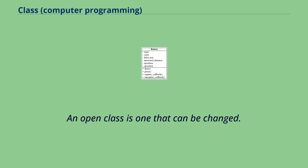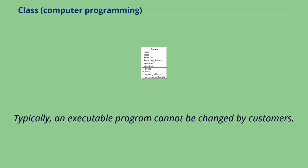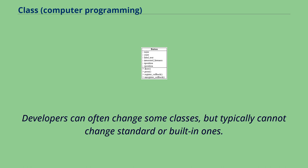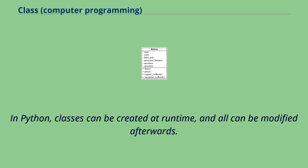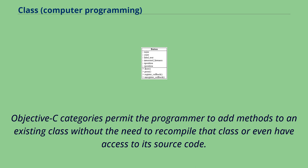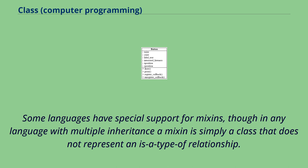An open class is one that can be changed. Typically an executable program cannot be changed by customers. Developers can often change some classes but typically cannot change standard or built-in ones. In Ruby, all classes are open. In Python, classes can be created at runtime, and all can be modified afterwards. Objective-C categories permit the programmer to add methods to an existing class without the need to recompile that class or even have access to its source code. Some languages have special support for mixins, though in any language with multiple inheritance a mixin is simply a class that does not represent an 'is-a' type of relationship.